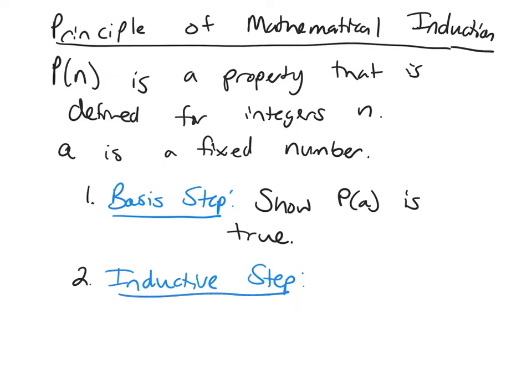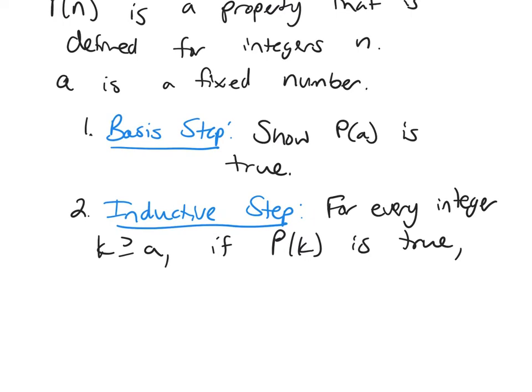And then the second step is called the inductive step. And what you need to do is you need to show for every integer k greater than or equal to a, if P of k is true, then P of k plus 1 is true.